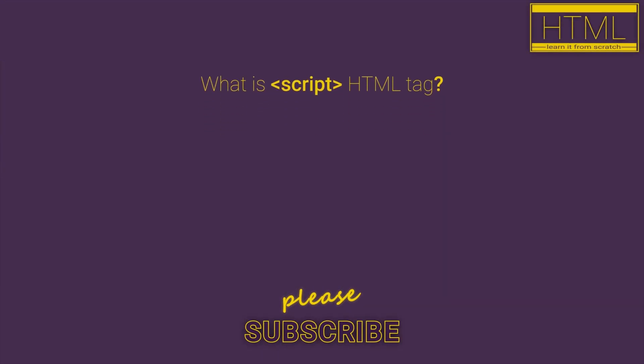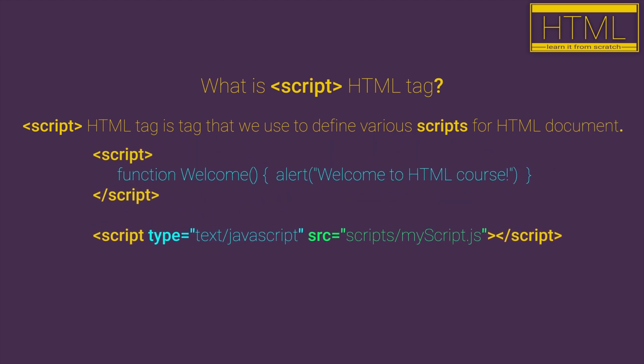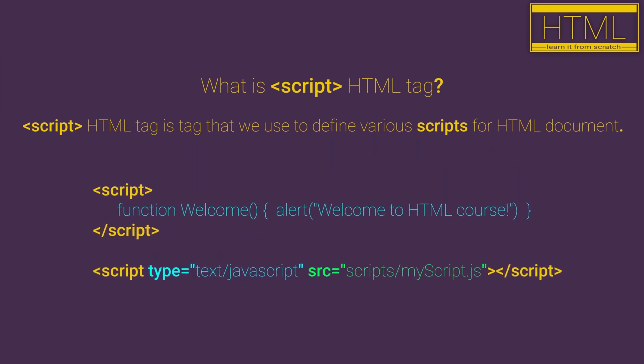The script HTML tag is the tag that we use to define various scripts for our HTML document. For example, if we want to use a JavaScript function inside of our HTML document, we can use the script HTML tag.